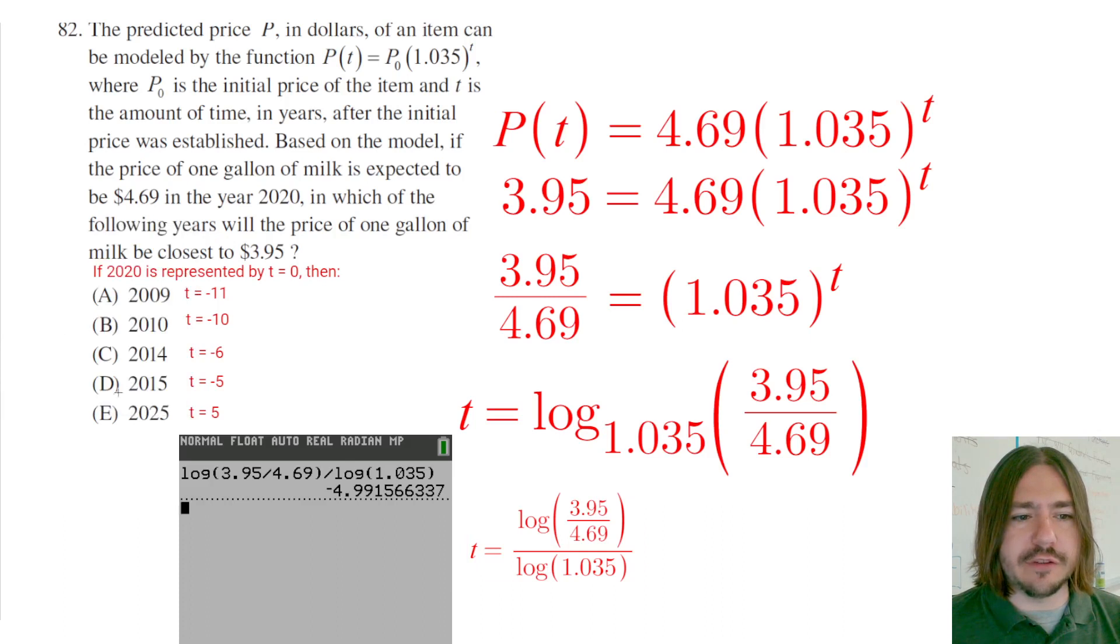So going back to look at my different choices here, I can see that my answer here is going to be choice D. 2015 is five years before 2020, so we know that the t value there is going to be negative 5.